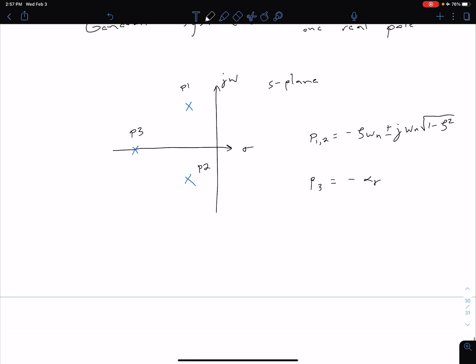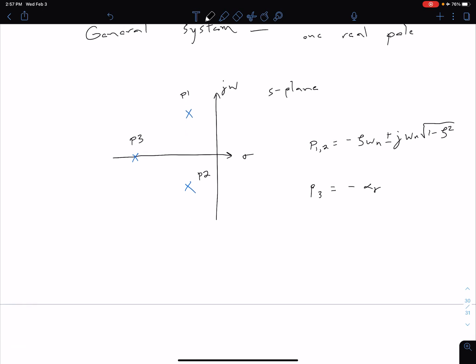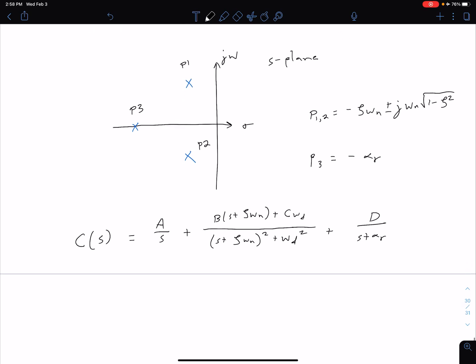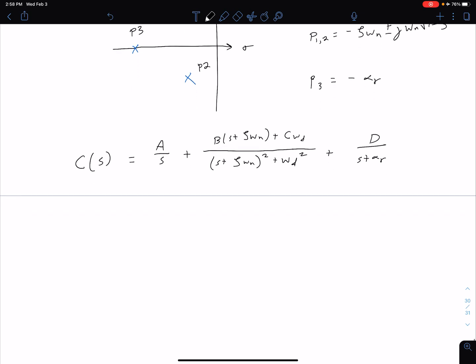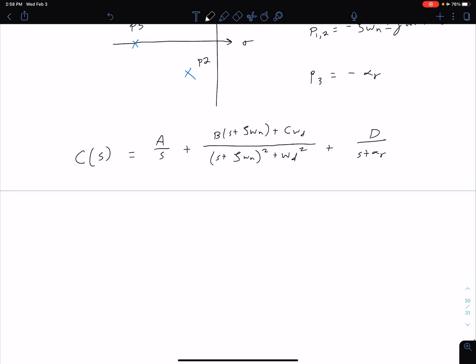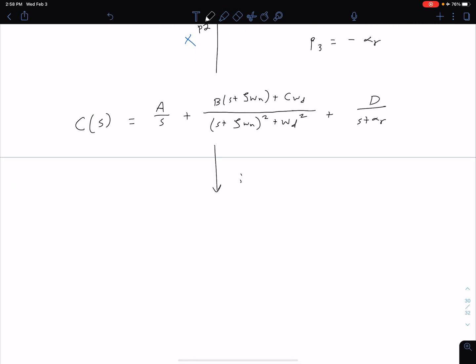It turns out if we have that configuration and we put a step input to the system, we're going to have some output in the frequency domain: C(s) = A/s plus, from our two complex poles, (B·(s + σ·ωn) + C·ωd) / ((s + σ·ωn)² + ωd²), and then from our real pole we'll have D/(s + αr). This is shown after doing partial fraction expansion. We would want to solve for A, B, C, and D.